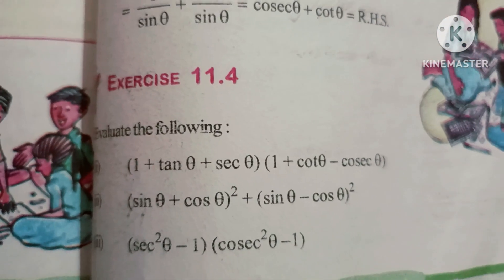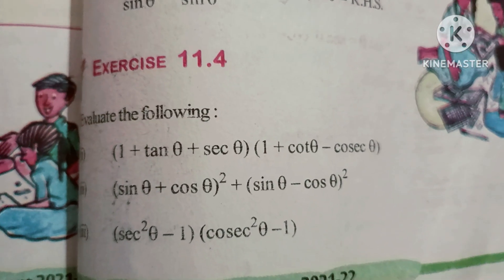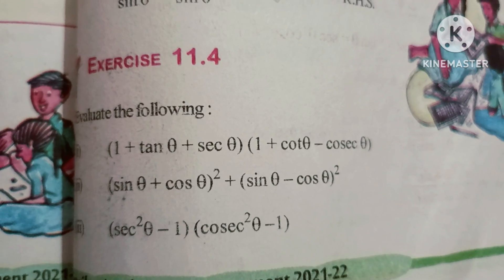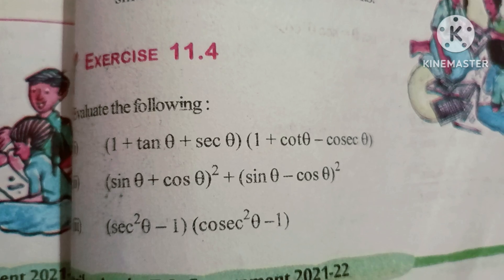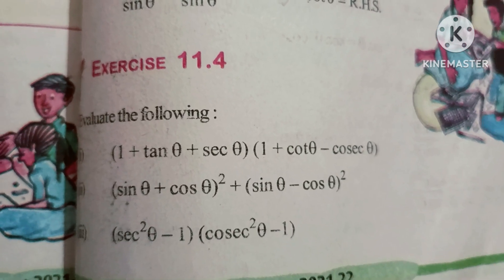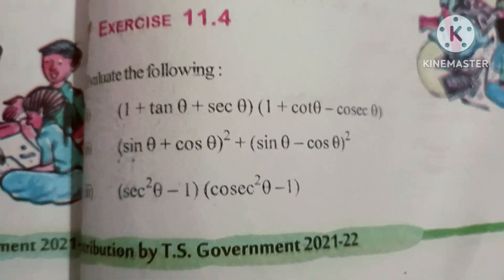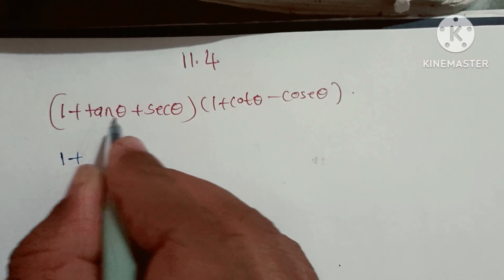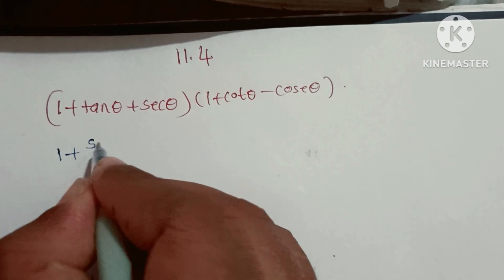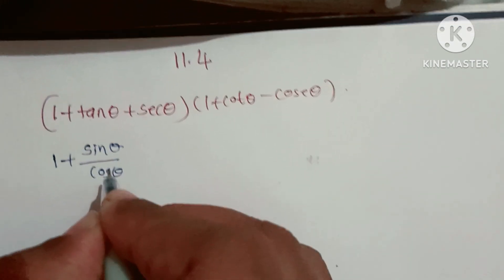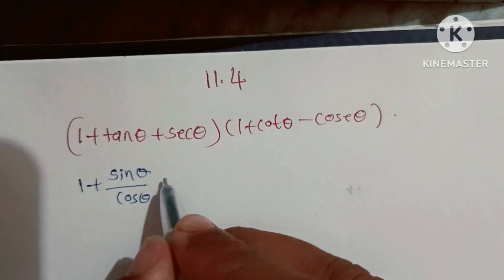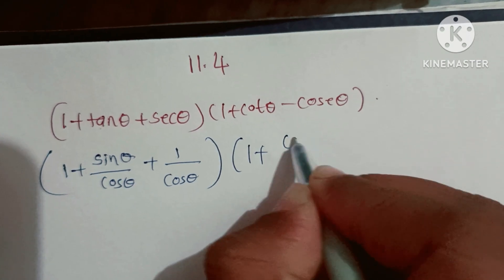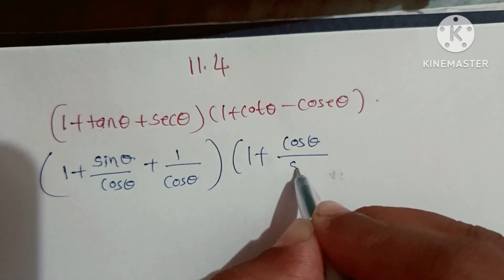Let us start Exercise 11.4. First problem: (1 + tanθ + secθ) into (1 + cotθ - cosecθ). Write the standard forms: tanθ can be written as sinθ/cosθ, secθ means 1/cosθ, into 1 + cosθ/sinθ minus 1/sinθ.